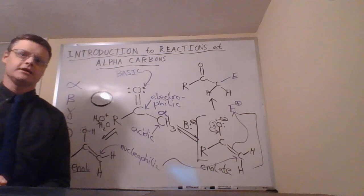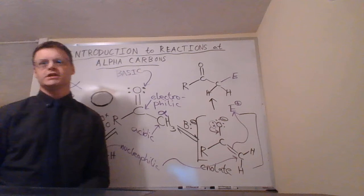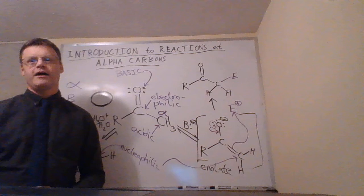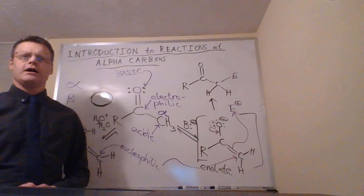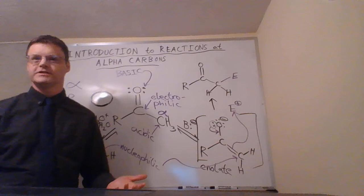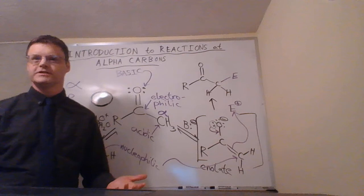Depending on what that electrophile is, it's going to give us the different reactions that we're going to study in this chapter. If this is Br2, we're going to do an alpha halogenation. If it's an alkyl halide, we're doing an alpha alkylation. If it's an aldehyde or a ketone, we're doing an aldol reaction or an aldol condensation. If it's an ester, we're doing a Claisen condensation. We can even do an alpha-beta unsaturated ketone, and then we're doing a Michael reaction. And now I'm almost to the end of the chapter, so I better stop here.